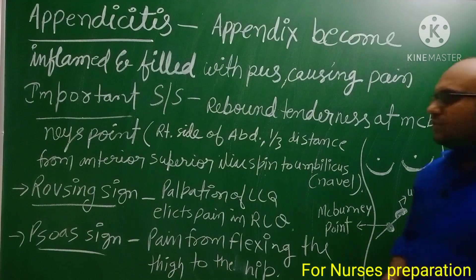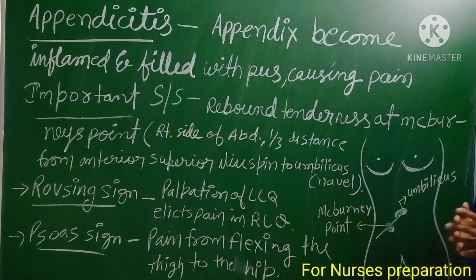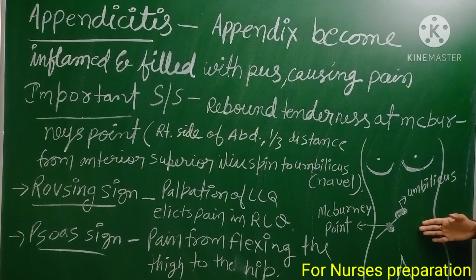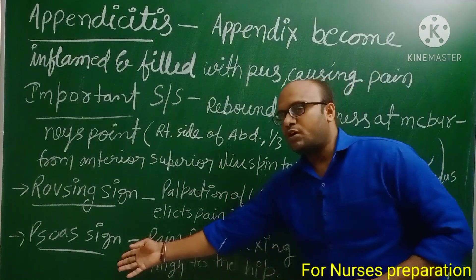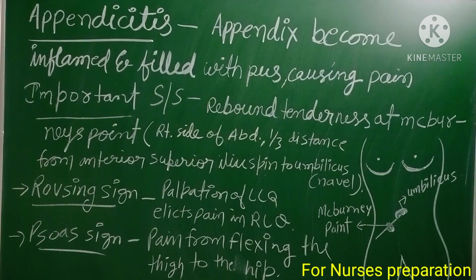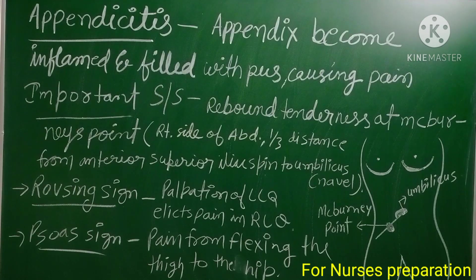The second important sign of appendicitis is Rovsing's sign — palpation of the left lower quadrant elicits pain in the right lower quadrant. The third sign is the Psoas sign: pain from flexion of the thigh at the hip. To summarize, the three important signs to diagnose appendicitis are rebound tenderness at McBurney's point, Rovsing's sign, and the Psoas sign.